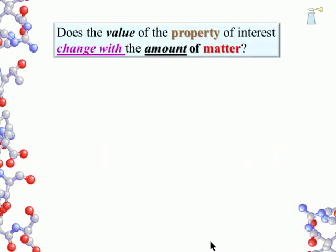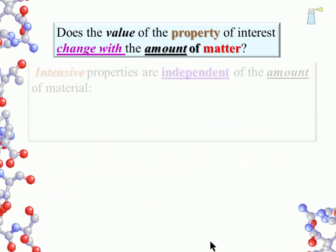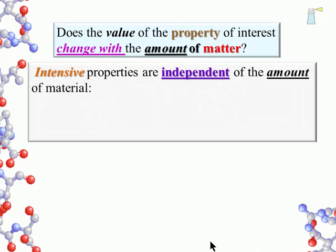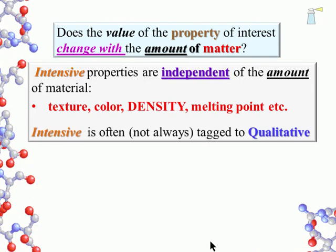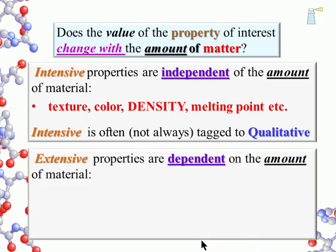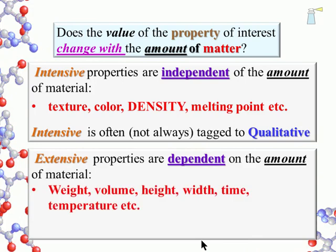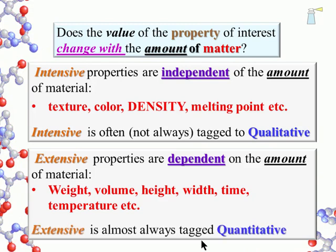The other major category in physical properties considers whether there is a change in the property with a change in the amount of matter. Intensive properties are independent of the amount of matter — examples include texture, color, density, and melting point. Doubling the amount of matter does not alter the description of the property. Intensive is often but not always tagged to qualitative. If the properties are dependent on the amount of material, the property is called extensive. Examples include weight, volume, height, time, and temperature — anything that changes with size is an extensive property. Extensive is almost always tagged to quantitative.